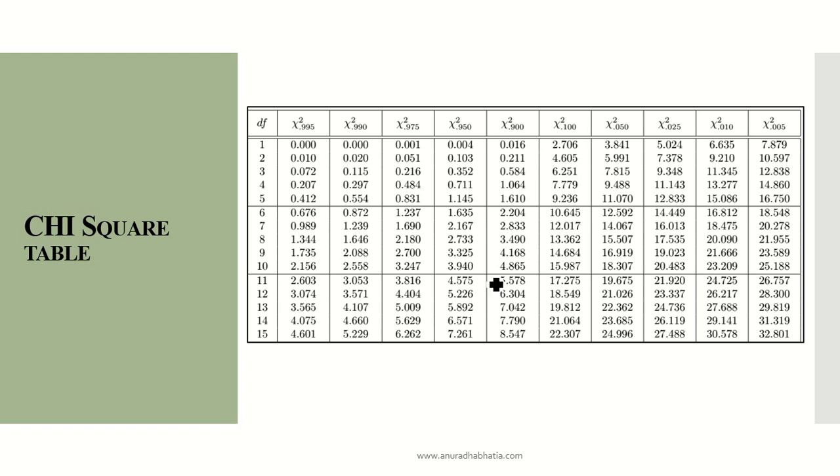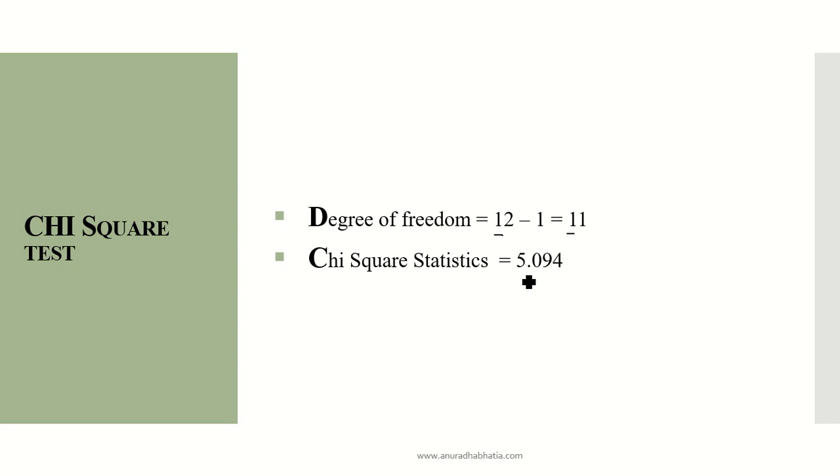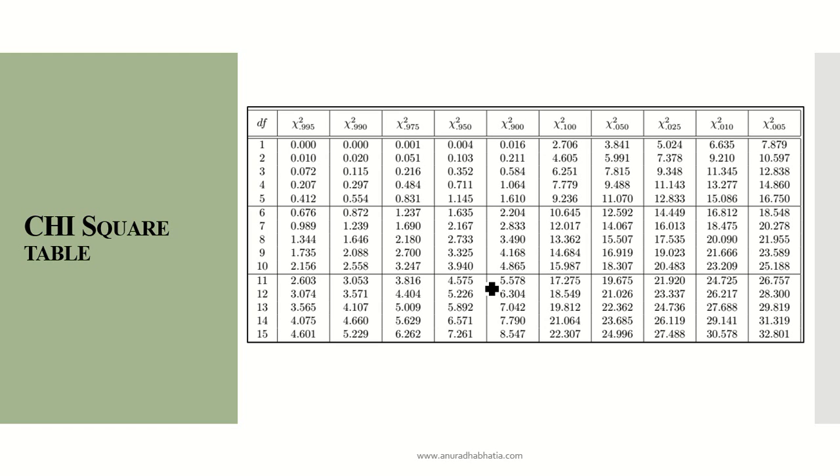This is the chi-square table we need to follow to find the p-value. The statistical value is 5.094. We see where the degree of freedom lies—in our case, it's 11. For degree of freedom 11, the value 5.094 lies somewhere between these columns, so the chi-square value will be between 0.900 and 0.950.